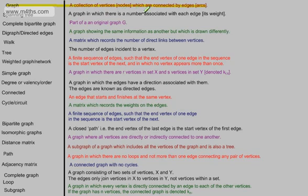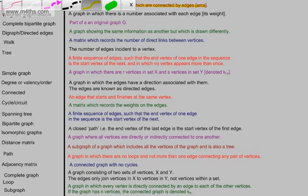The next one, a graph in which there is a number associated with each edge, its weight. That's what we call a weighted graph or a network. When you're doing critical path analysis later on and you look at an activity network, on each of the arcs you'll have either a time, a distance or a cost. We say that's a weighted graph or a network. Let's lock that one in.